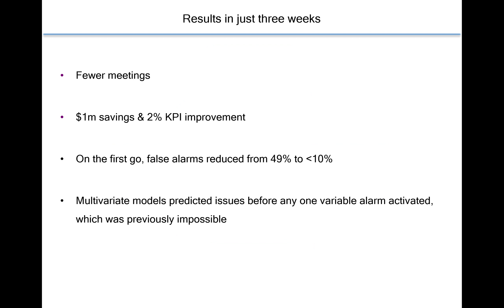Results in just three weeks from one commodity chemicals company were significant: a million dollar savings and 2% KPI improvements. On the first go, false alarms reduced to under 10%, and multivariate models were used to predict issues before any one variable alarm was activated.